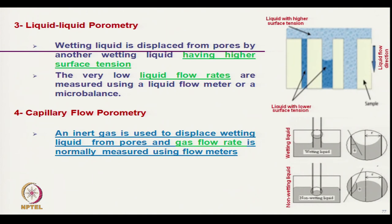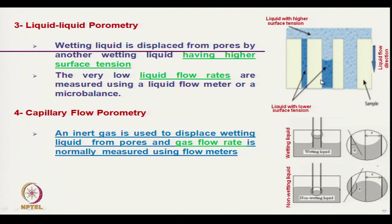The next technique is liquid-liquid porometry. Here we use two different liquids — one with higher surface tension and another with lower surface tension. The lower surface tension liquid wets the surface easily. The wetting liquid is displaced from the pore by another wetting liquid with higher surface tension applied at higher pressure, pushing the lower surface tension liquid out. Pore dimension is measured based on the liquid flow velocity using flow meters or microbalances.